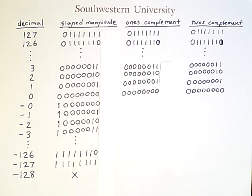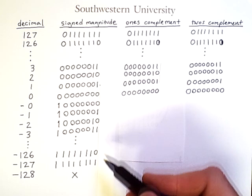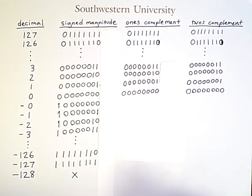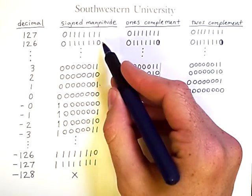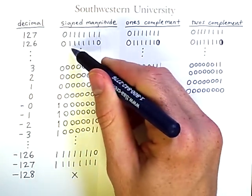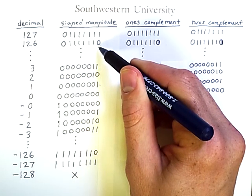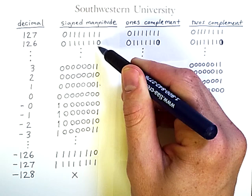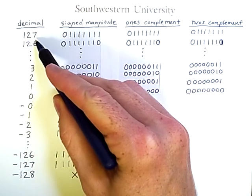This video analyzes some of the number representation systems we've been discussing in more detail. The signed magnitude column is already filled out because we've already been discussing it. We use 8 bits as usual, which means we can use 7 bits for the magnitude portion of the number, and that means the highest number we can represent is 127.